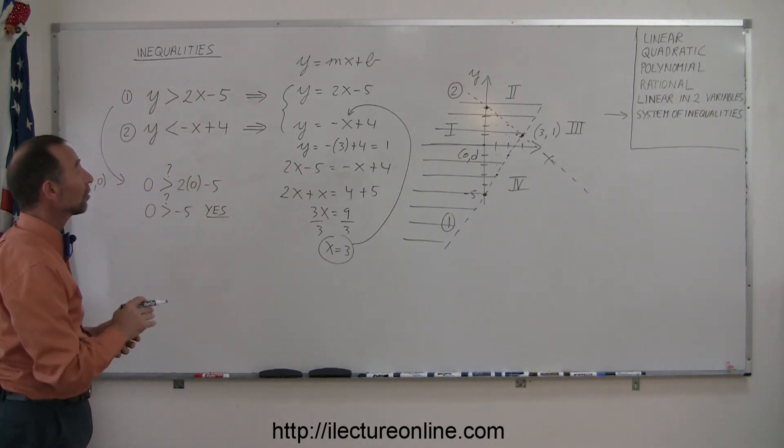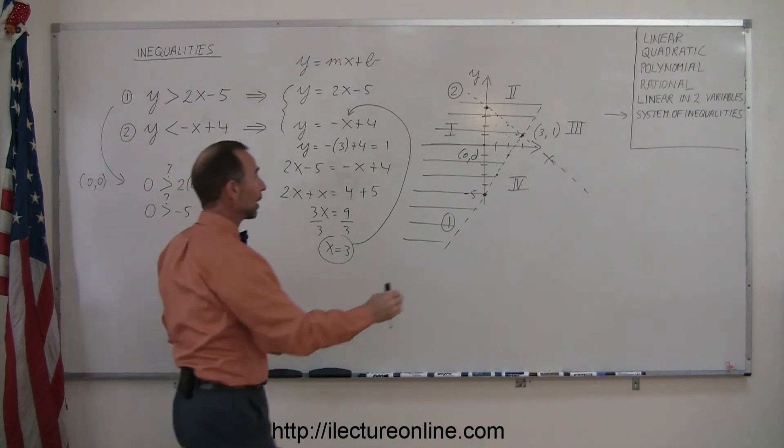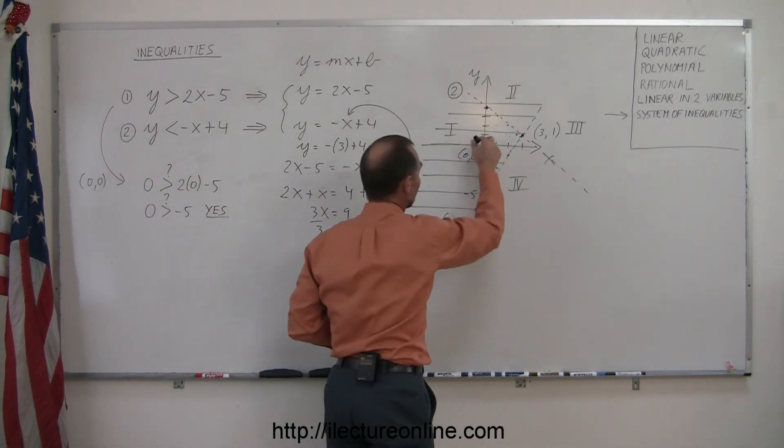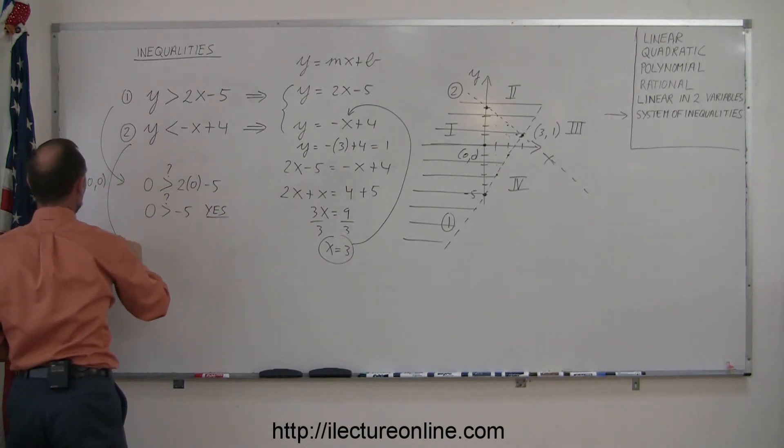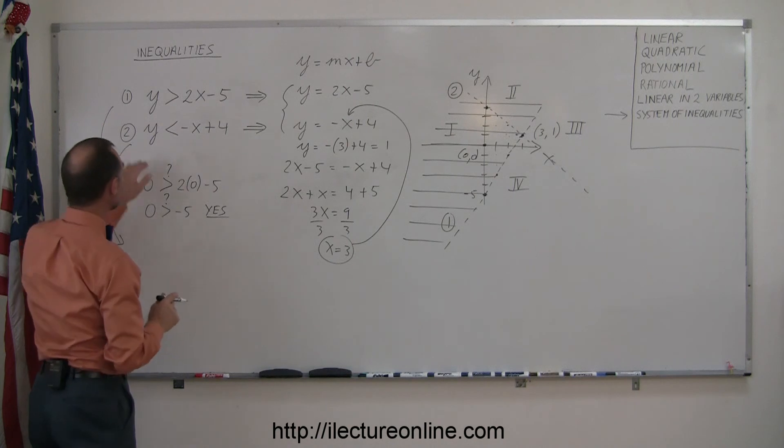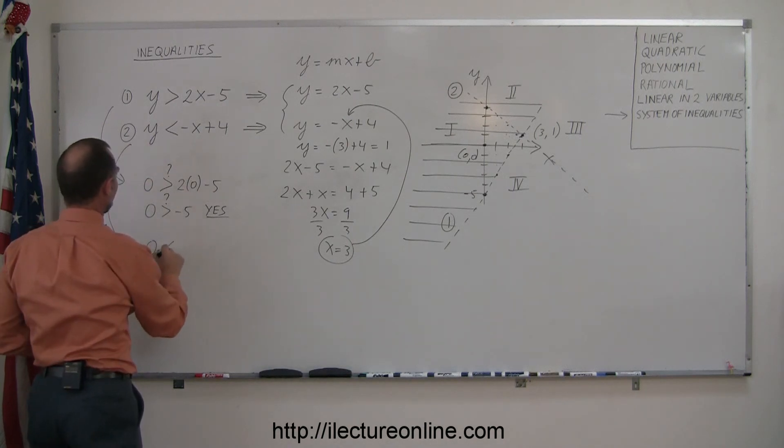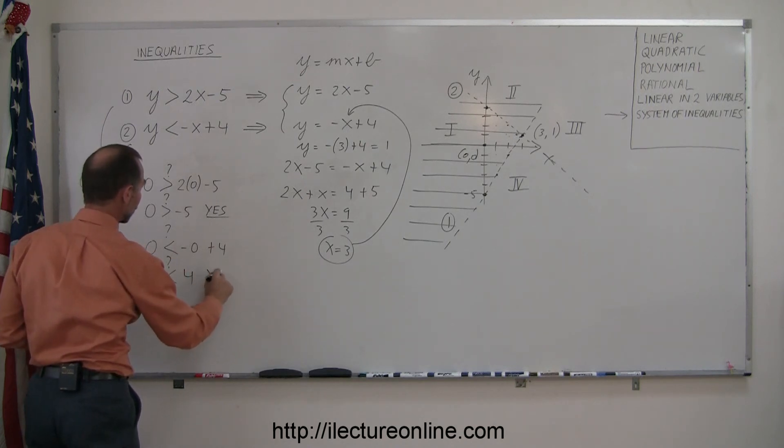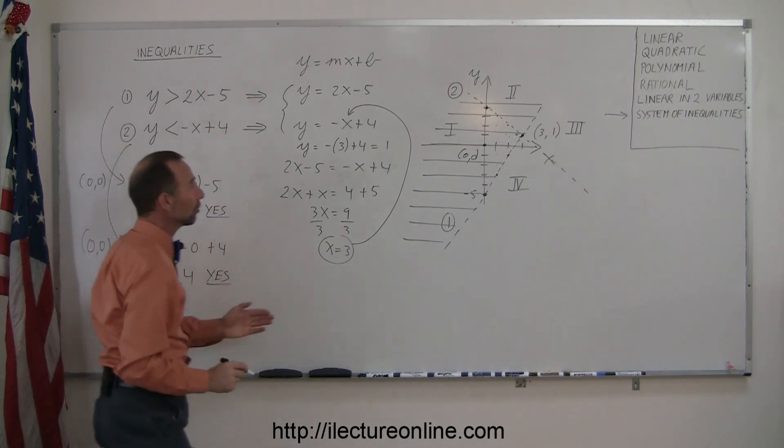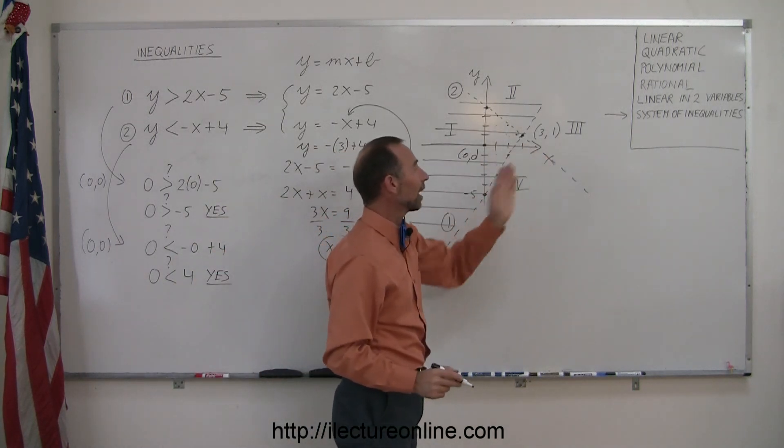We now are going to do the same to the second line, this line right here. We pick a point, again, 0, 0 is a very good point to pick, so we're going to plug that into our second inequality. So 0 is less than, question mark, minus 0 plus 4. Or 0 is less than 4, question mark, and the answer is yes, that's also true. So 0, 0 is also on the correct side of this second line.